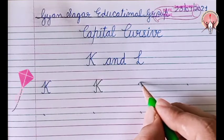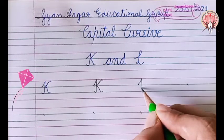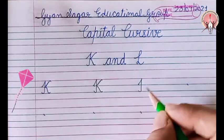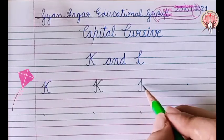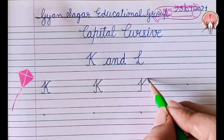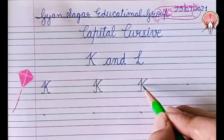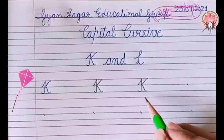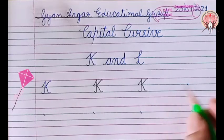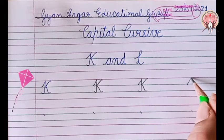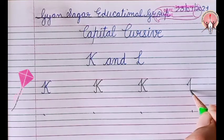Go up. Come down. Make a small curve. Come to the middle. Go upwards. Now again come to the middle. Go downwards. K. Capital cursive K.